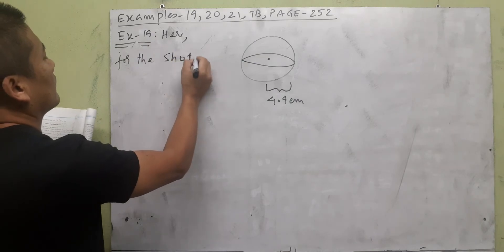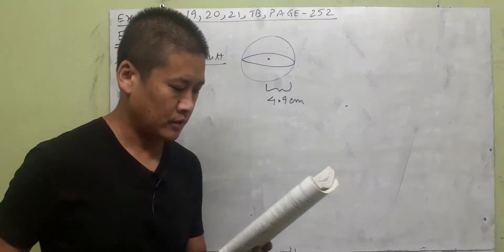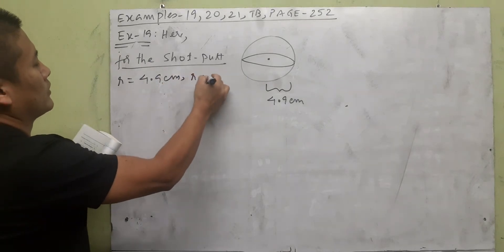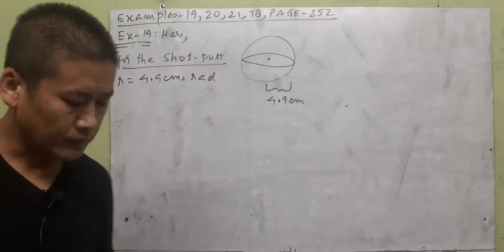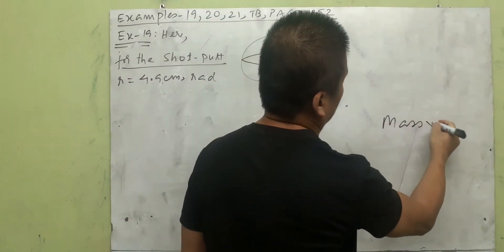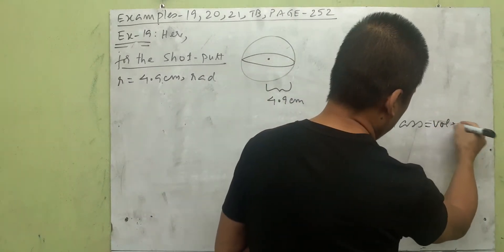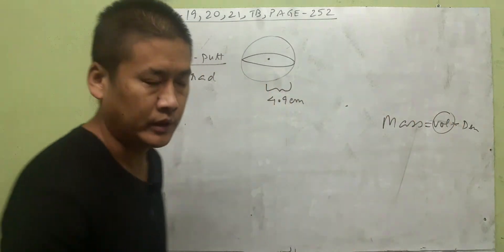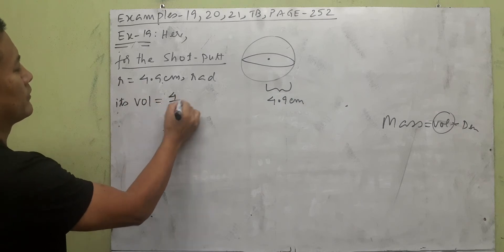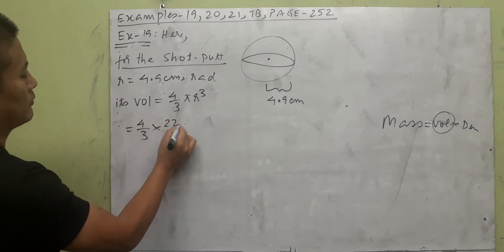The iron shot put is used for throwing during sports. The radius r is equal to 4.9 centimeters. We need to find the mass, and the formula is: mass equals volume multiplied by density. So let us find the volume. For a sphere, the volume formula is 4/3 π r³. So we write 4/3 into π, which we take as 22/7.